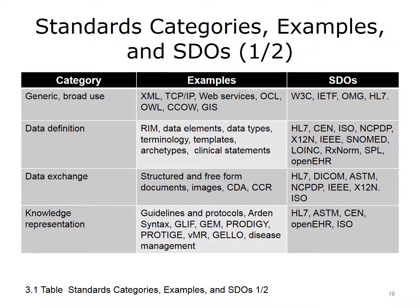This slide and the next summarize the category of standards, give examples, and name some of the SDOs creating those standards. You will see some examples that you have not seen before. In the generic use category, OCL is Object Constraint Language, which is a language to constrain information models related to such attributes as data characteristics, linkages, or use. OWL is Web Ontology Language, and GIS is Geographic Information System or Geocoding Standards. These groupings will be discussed throughout this component.